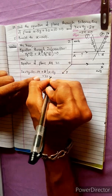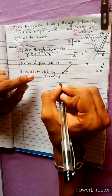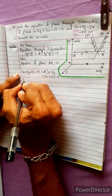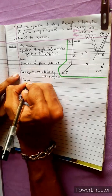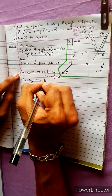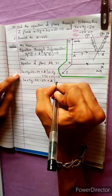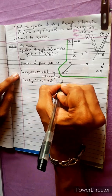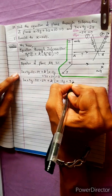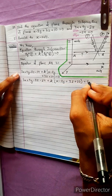The equation becomes: 3z plus 10 equals zero. Now we arrange this. We have 5y minus 2z minus 14 plus k times (x minus 2y plus 3z plus 10) equals zero.